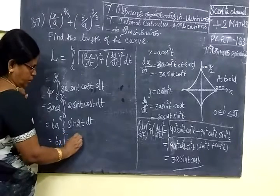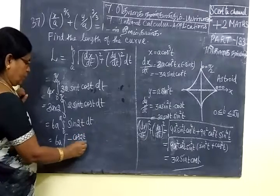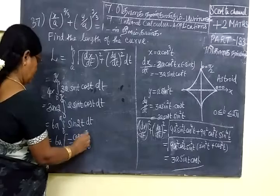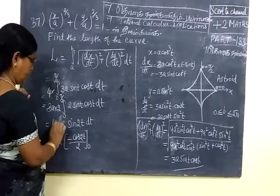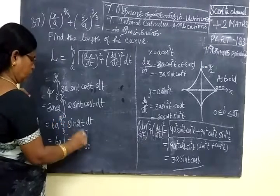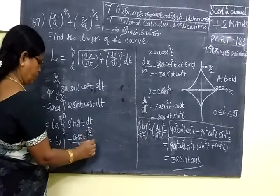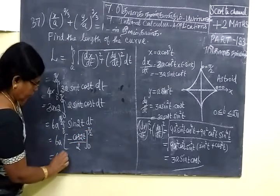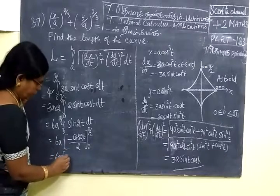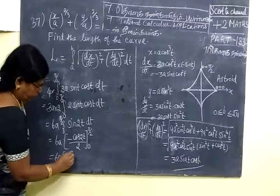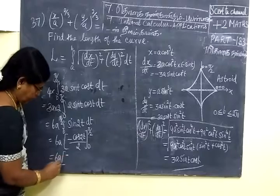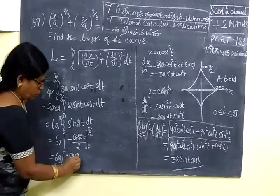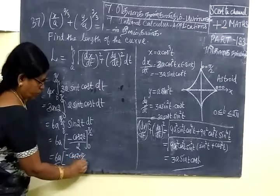So this integrate sin can be over minus cos 2t by 2, the limit is 0 to π/2. So this is equal to minus cos 2t, upper limit 2, also here goes to minus cos 2 into π/2.